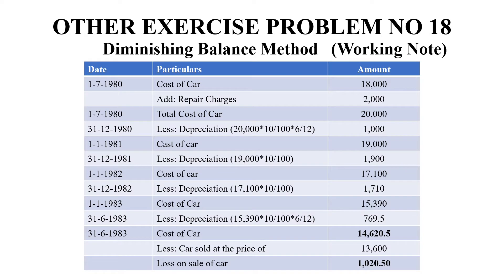In the working note, on 1-7-1980 a car was purchased for 18,000 rupees, and there were repair charges of 2,000 rupees, so the total actual cost of the asset comes to 20,000 rupees. The depreciation is calculated for 6 months — from 1st July to 31st December 1980 — that is 20,000 × 10/100 × 6/12, which equals 1,000 rupees. So the balance is 19,000 rupees.